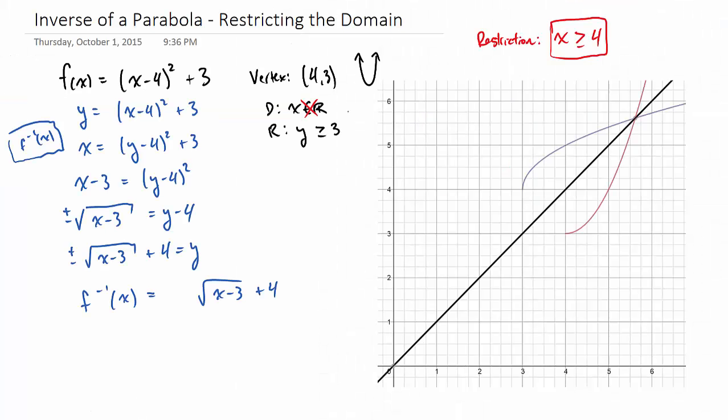Again, we can see how an inverse function is a reflection over the line y equals x. It's in black there. So the red one is the original function. Now with this new domain restriction, the bluish purple one over there is the inverse function. And like I said, the black line is y equals x.